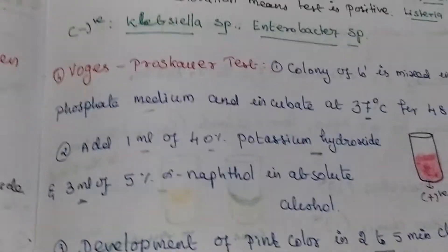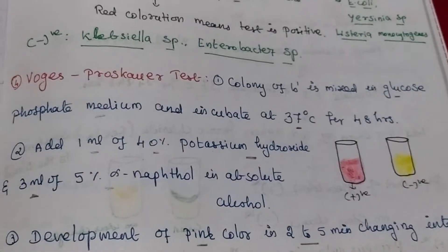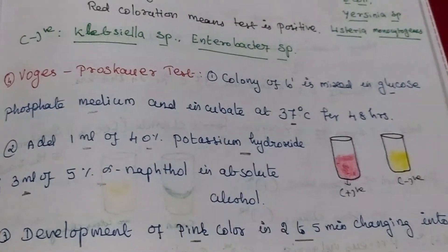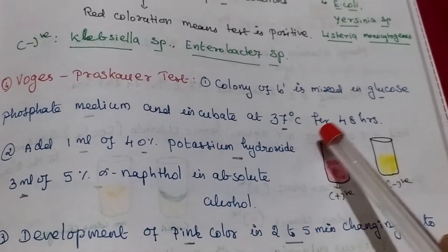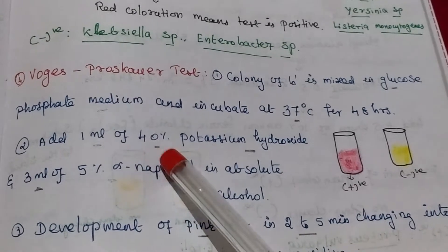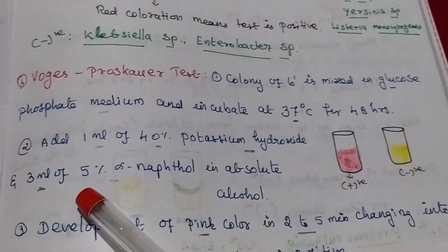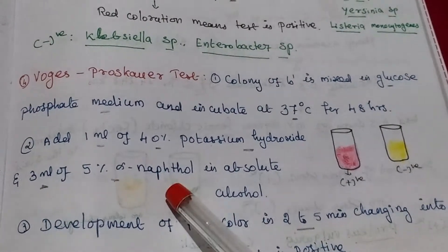Fourth test. Colony of bacteria is mixed with glucose phosphate medium and incubated 37 degrees Celsius for 48 hour. Then we are adding 1 ml of 40% potassium hydroxide and 3 ml of 5% alpha-naphthol.